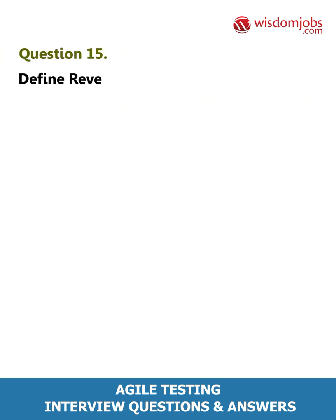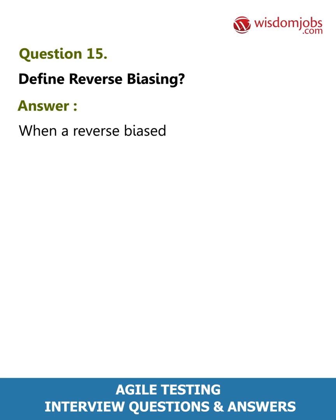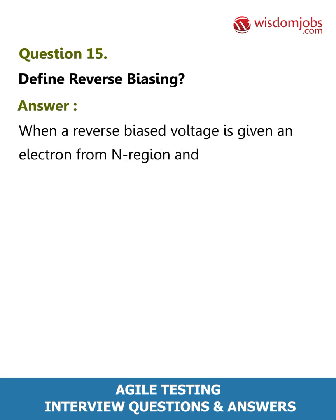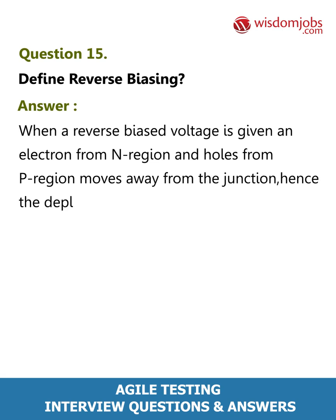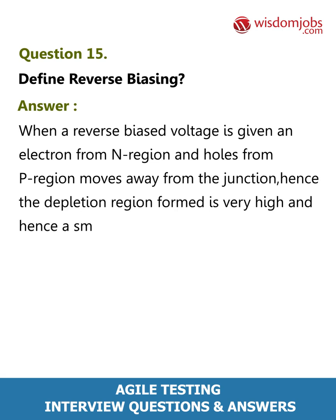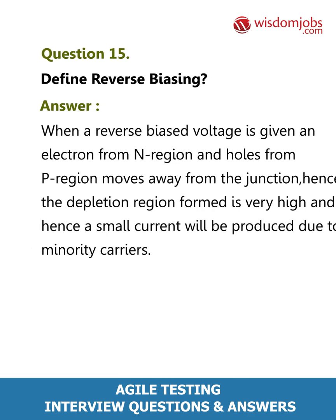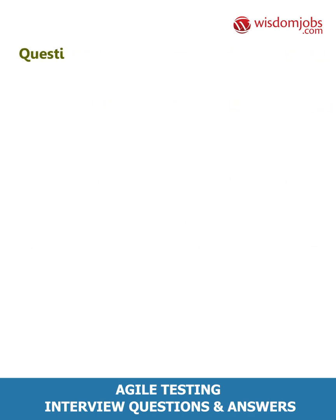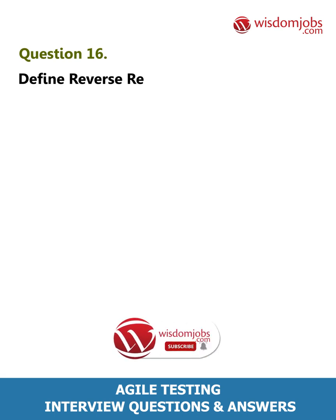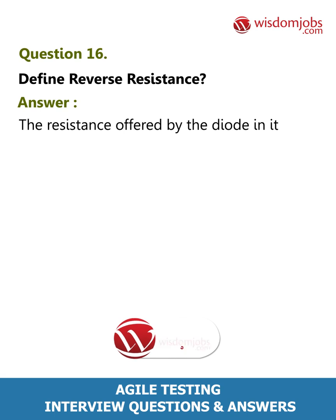Question 15: Define reverse biasing. Answer: When a reverse biased voltage is given, electrons from the N region and holes from the P region move away from the junction. Hence the depletion region formed is very high and a small current will be produced due to minority carriers.